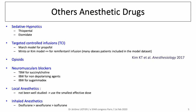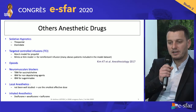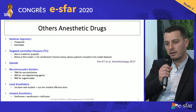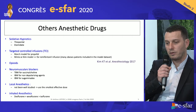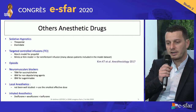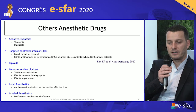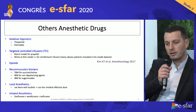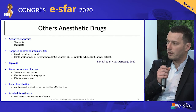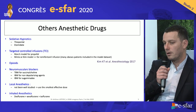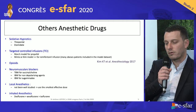For opioids, if you use sufentanil it's total body weight as mentioned before. For morphine, there is a lean body weight formula to use. For neuromuscular blockers, it's total body weight for succinylcholine and ideal body weight for the others. If you use local anesthetics, it has not been well studied, but we recommend using the smallest effective dose. For inhaled anesthetics, some studies recommend desflurane because there is quicker recovery and better washout, but you can also use sevoflurane and isoflurane.